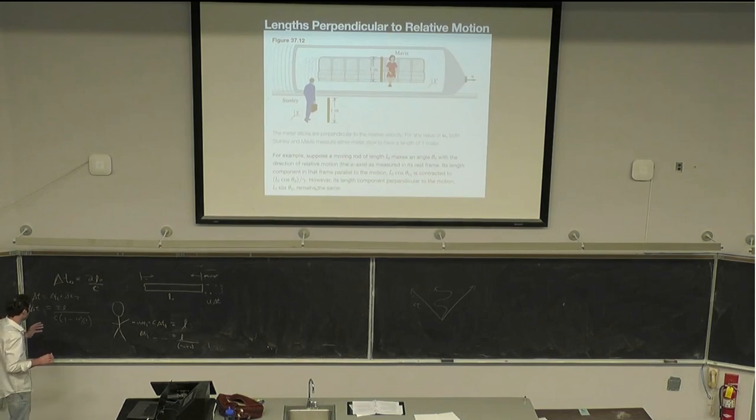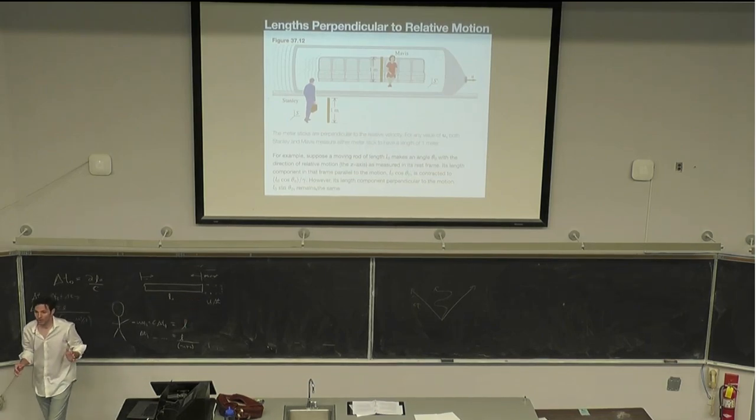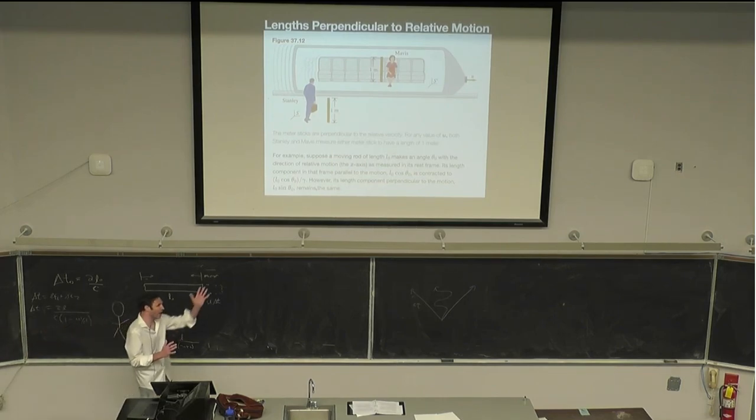We can show it with this complicated geometrical thought experiment, but the simplest way to see it is, well, this u applies to just the x direction because that's the only direction that the motion is occurring in. So since there's no change in y and z, y and z have the relative motion in those frames is the same for Stanley and Mavis. There's no change in y or z.